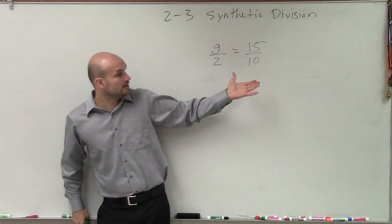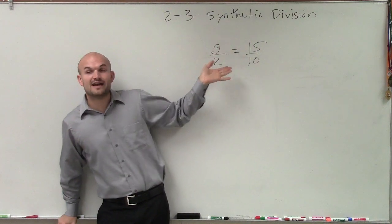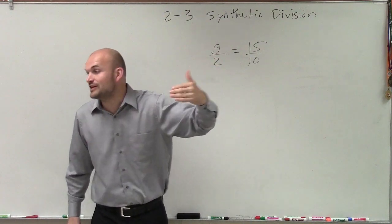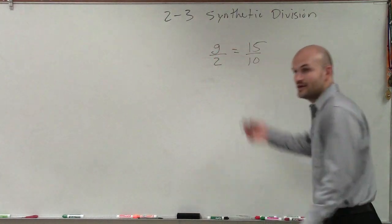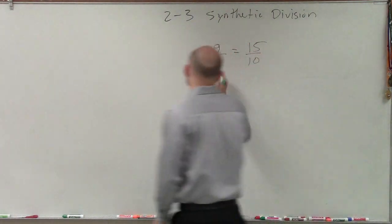So therefore, if we have g divided by 2 equals 15 over 10, if we're divided by 2, to undo division we have to multiply. Very good. So therefore, let's multiply by 2 on both sides.